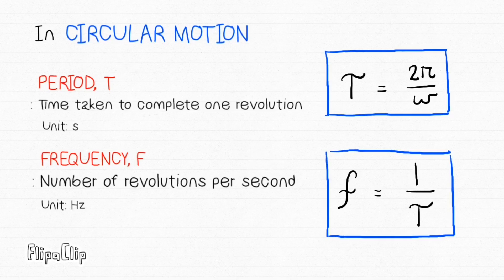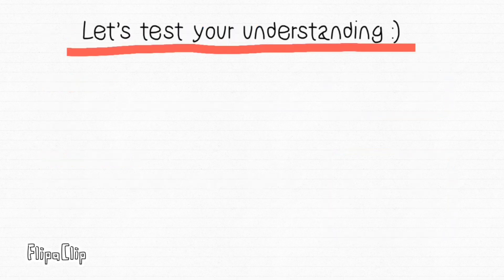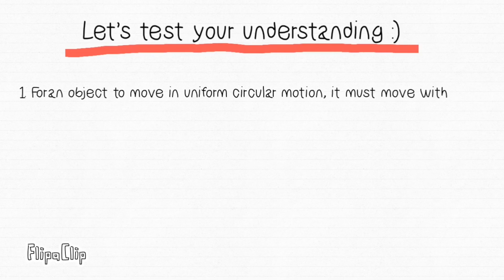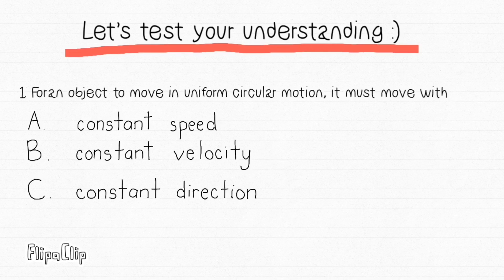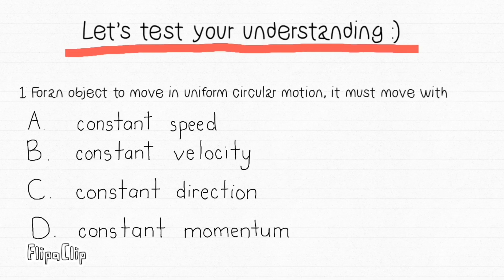Now let's test your understanding. For an object to move in uniform circular motion, it must move with: a) constant speed, b) constant velocity, c) constant direction, or d) constant momentum.